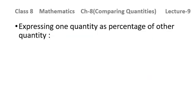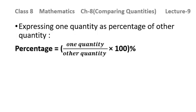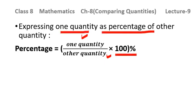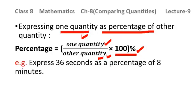Now, if I need to express one quantity as a percentage of the other quantity, percentage can be calculated by: one quantity over another quantity into 100%. The quantity you need to express goes in the numerator, and the other quantity — the whole — goes in the denominator, into 100%. For example, we need to express 36 seconds as a percentage of 8 minutes. The important point is that one is in seconds and the other is in minutes, so we need to convert first.